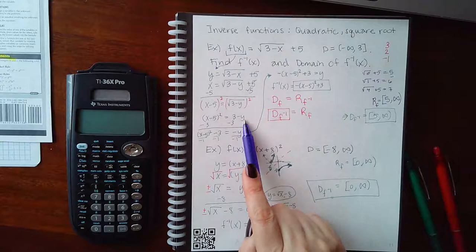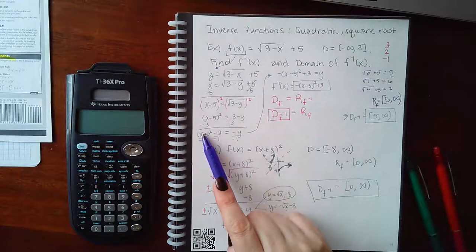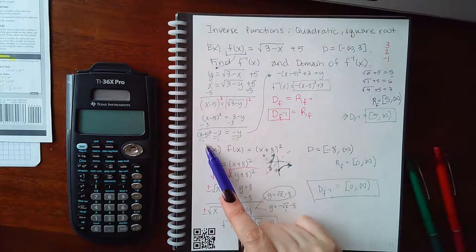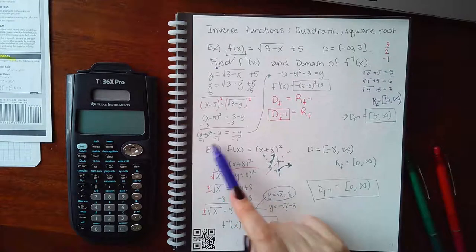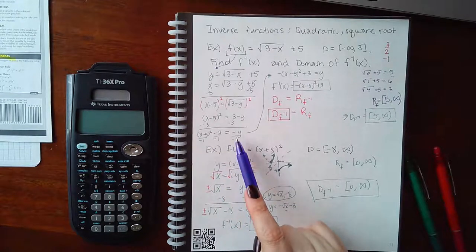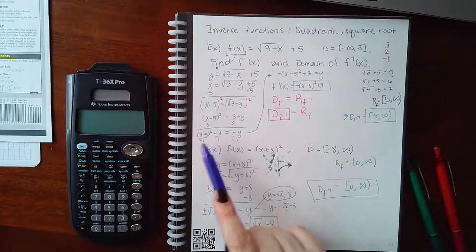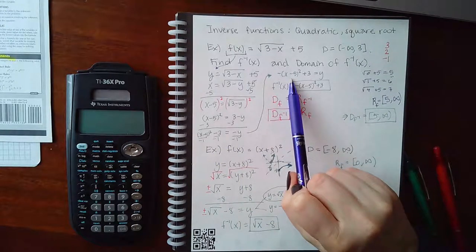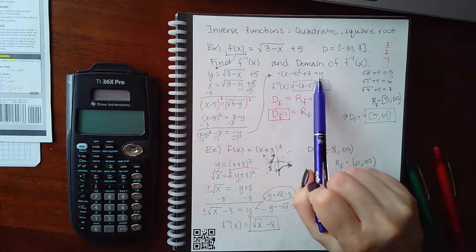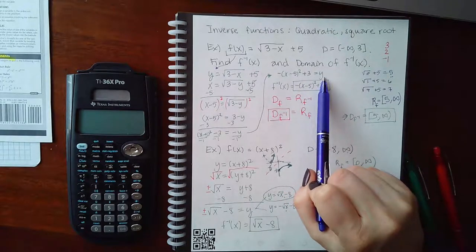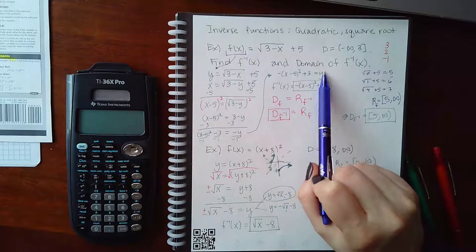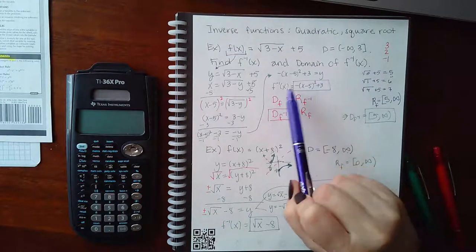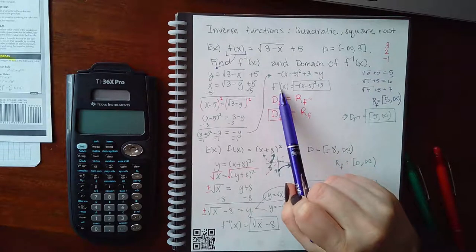To continue solving for y, we subtract 3 from both sides, ending up with x minus 5 squared minus 3 equal to negative y. Then we divide every term by negative 1, giving us negative x minus 5 squared plus 3 equal to positive y. The last step is to write f inverse of x instead of y.